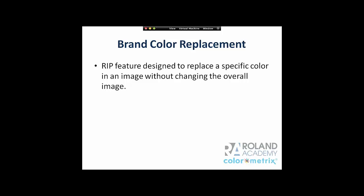Brand color replacement — many RIPs allow essentially a brand color or spot color replacement table. Once you've created the correct profile and you know what brand colors you're trying to hit, there are ways in RIPs — though it differs from RIP to RIP, and some won't even do it — where you can say: whenever you see this color number or name, produce it this way, as long as you're using this profile. It's another way to ensure you're hitting the correct brand color for your client.